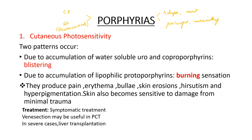Symptomatic treatment should be done and the patient should be told to use sunscreens. Venesection is useful in porphyria cutanea tarda. In very severe cases, liver transplantation may be warranted in erythropoietic protoporphyria. Afamelanotide is recommended for prevention of cutaneous photosensitivity. Beta-carotene in large amounts also helps in prevention of photosensitivity.